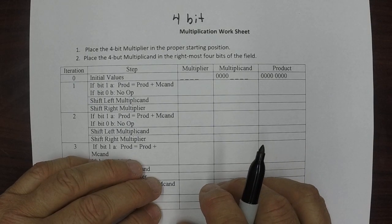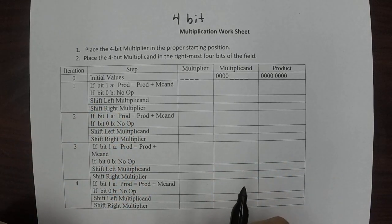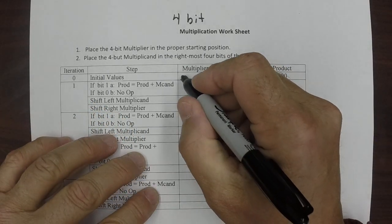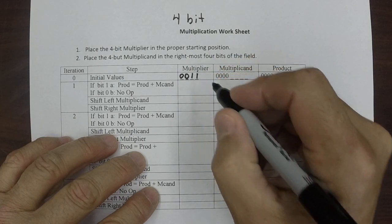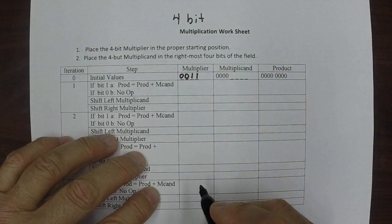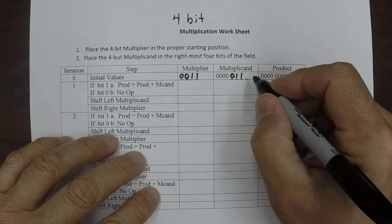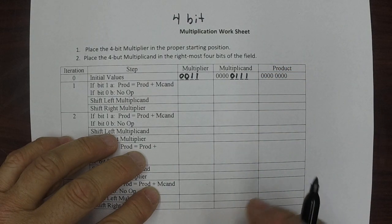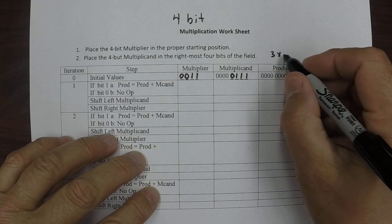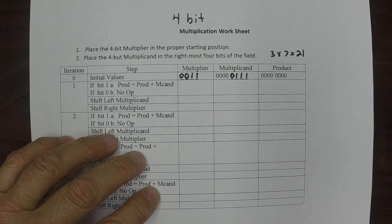The first thing we're going to do is load our registers with the numbers. I'm going to put the number 3 in here and we're going to say 3 times 7. That is the binary representation of the number 7. You should know that 3 times 7 is equal to 21, and we'll see if we come out with that answer.